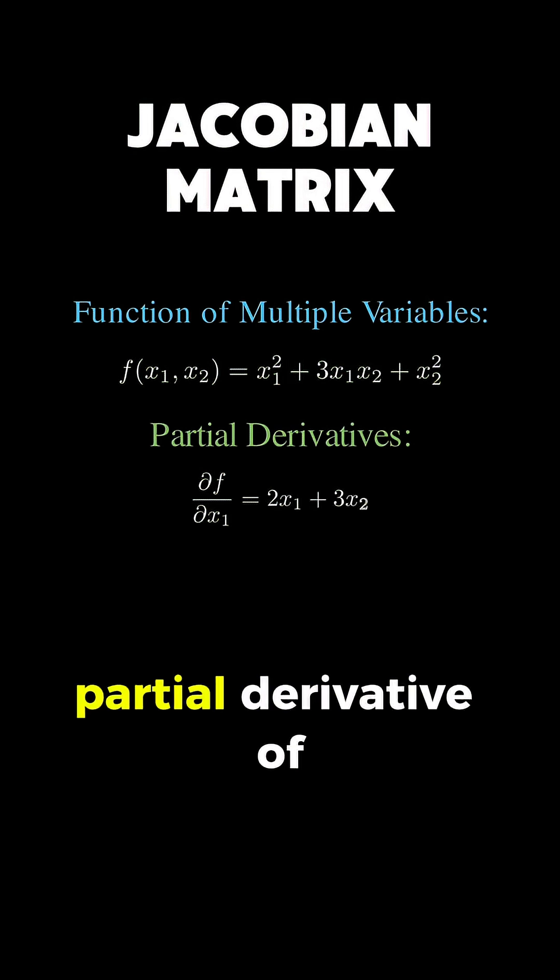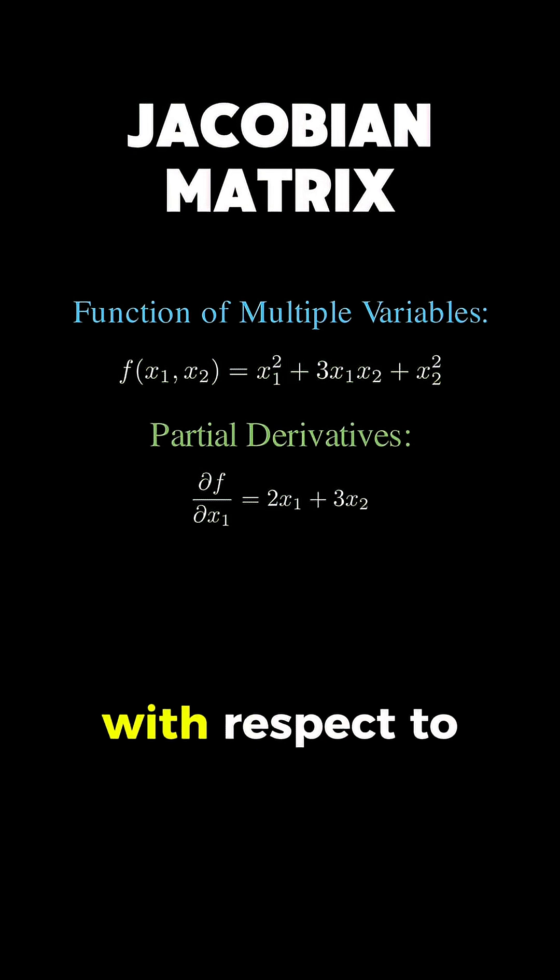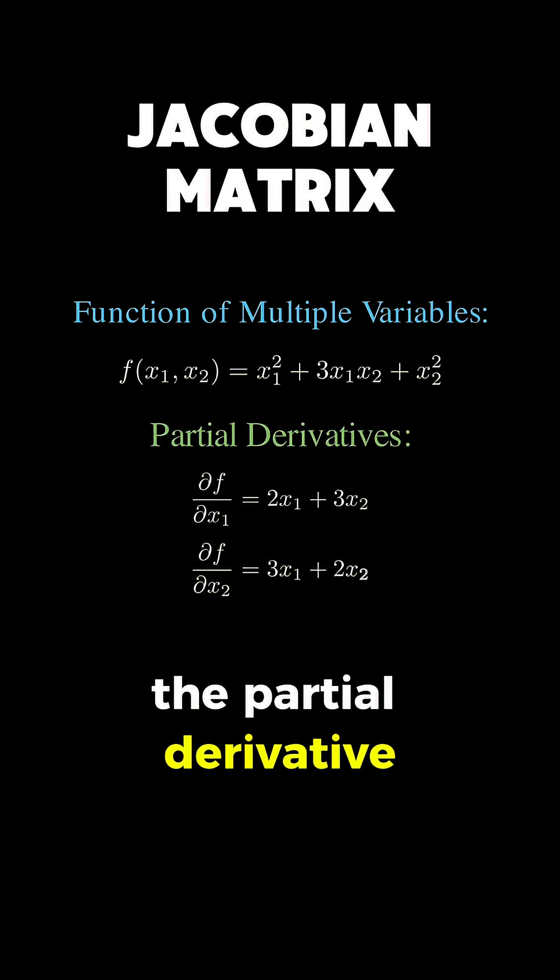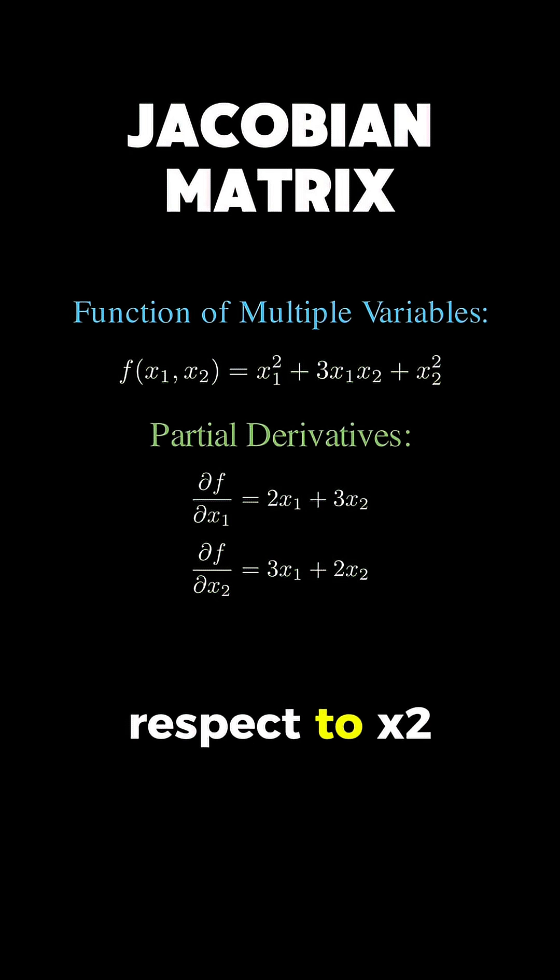We compute the partial derivative of f with respect to x1 and separately the partial derivative of f with respect to x2. Now comes the beautiful leap that defines the Jacobian matrix.